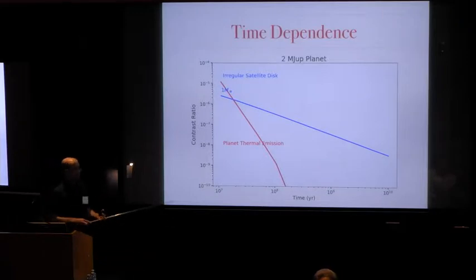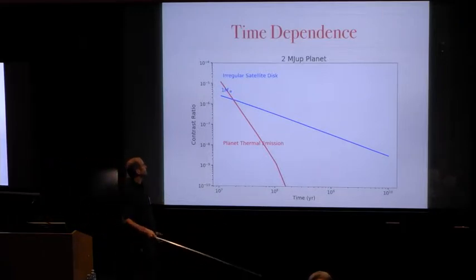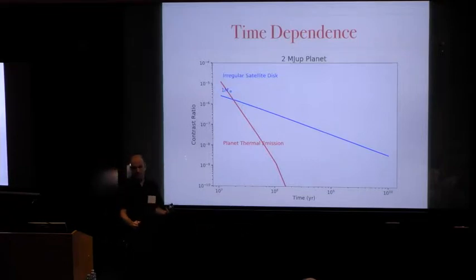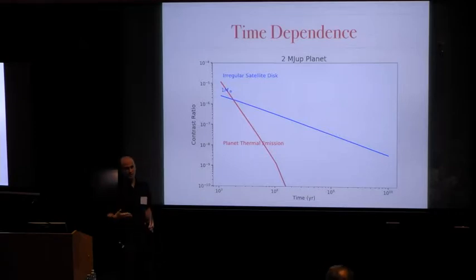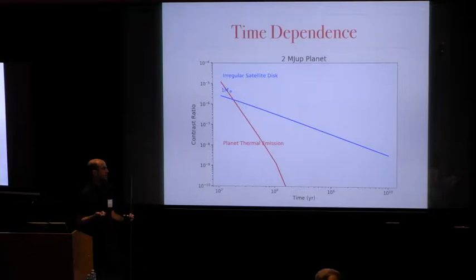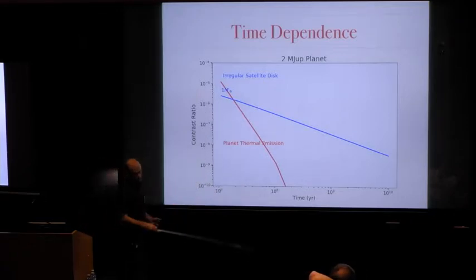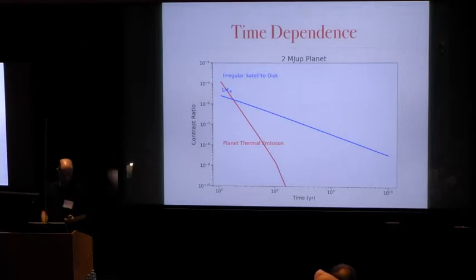The other place that you gain is in time. So planets cool and then you have the same problem. As you cool, then your thermal emission drops off a cliff. By contrast, these debris disks, what they want to do is they want to evolve into a state where the collision time between the largest particles is comparable to the system's age. So they decay as one over time. They decay much more gradually as you move forward in time.